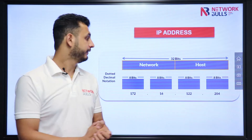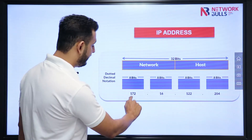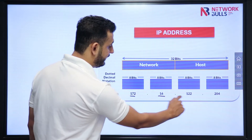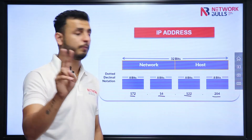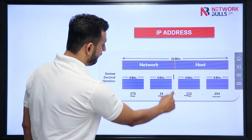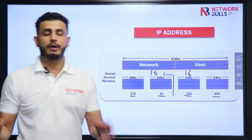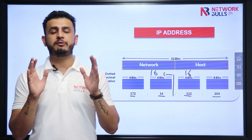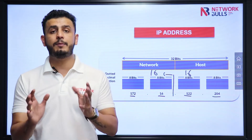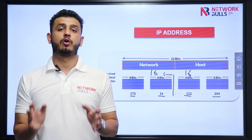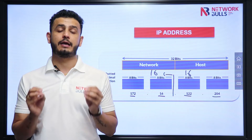An IP address is actually divided into two parts: network bits and host bits. For example, the IP address 172.16.122.204 is divided into 16 network bits and 16 host bits. Network bits define how many sub-networks we can have, and host bits define how many hosts we can have in that particular network.